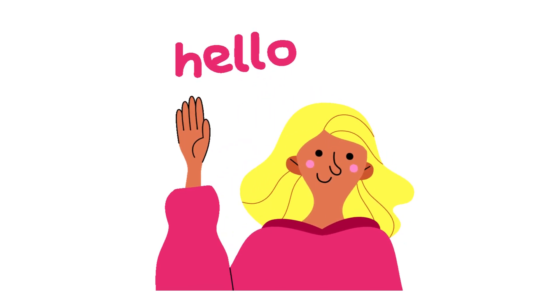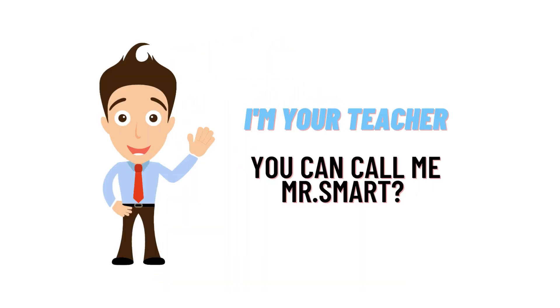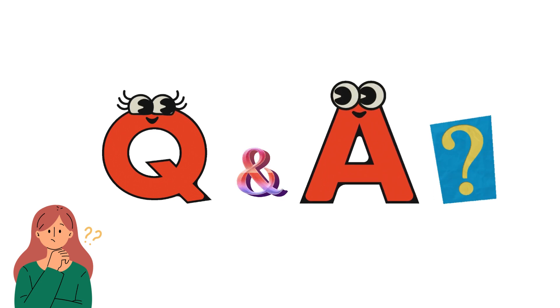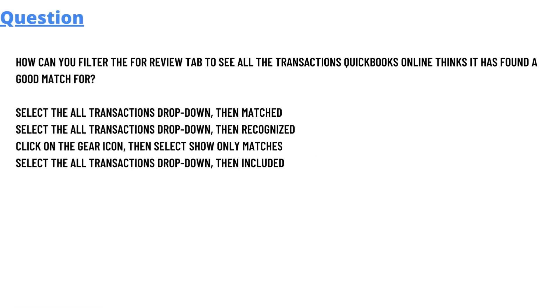Hello everyone, my name is Mr. Smart and I am your teacher. I will be teaching a different question and answer in this question and answer series spec class. Today's question which we will be discussing is: how can you filter the Review tab to see all the transactions QuickBooks Online thinks it has found a good match for?